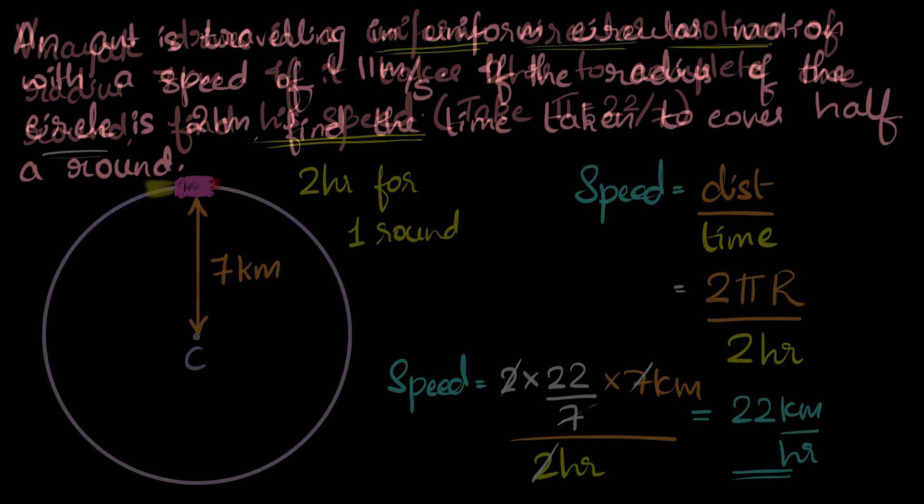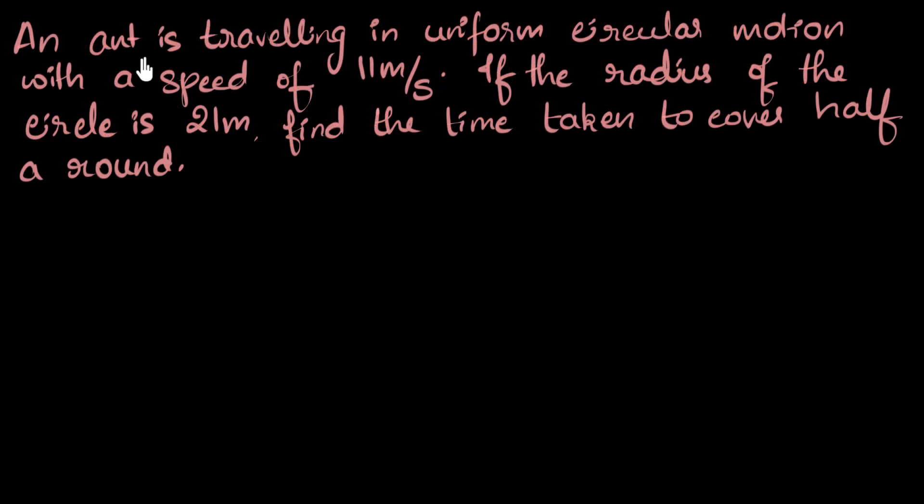All right, let's do one more. An ant is traveling in a uniform circular motion with a speed of 11 meters per second. If the radius of that circle is 21 meters, find the time taken to cover half a round.